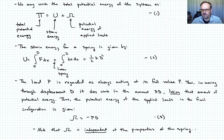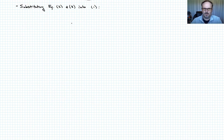So now it's going to be fairly straightforward. We're going to substitute equation two and three into equation one. And when we do that, we end up being able to write that the total potential energy pi is equal to one-half kd squared minus pd. We'll call that equation four.